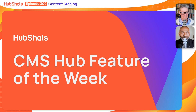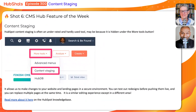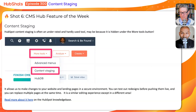On to our HubSpot CMS feature of the week — we're going to talk about content staging. Lots of customers, as we go into their CRM, we see people creating new pages or versions of pages and sticking long headlines on there saying 'this is version 5, do not publish under any circumstance,' or they're cloning pages inside website and landing pages. Content staging is a great place, especially if you've got to go through a process of getting approval or if you're redesigning a site.